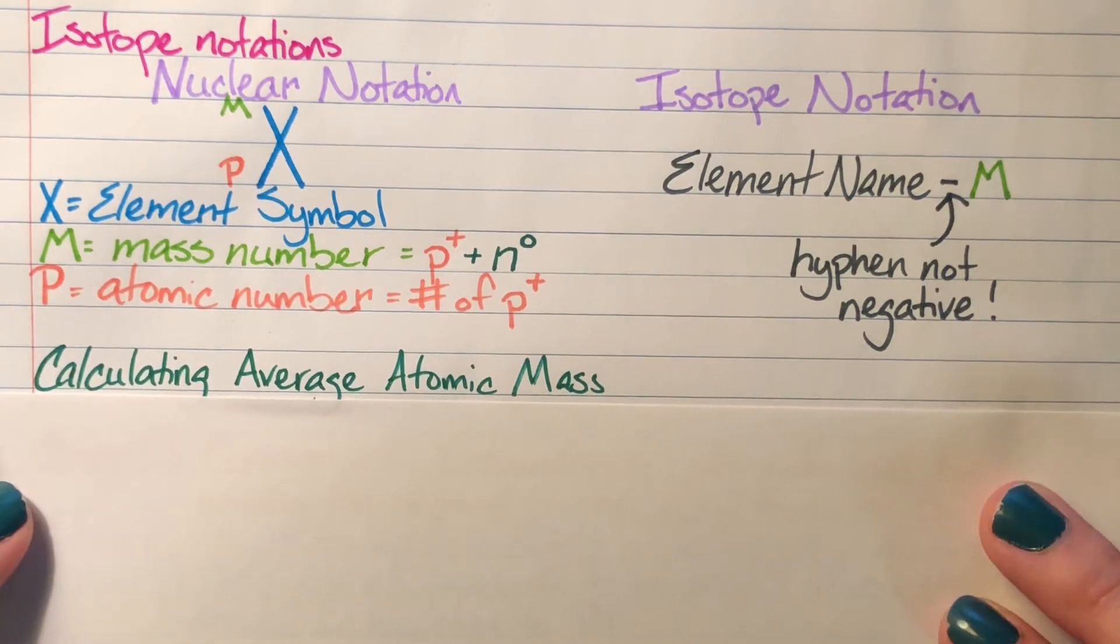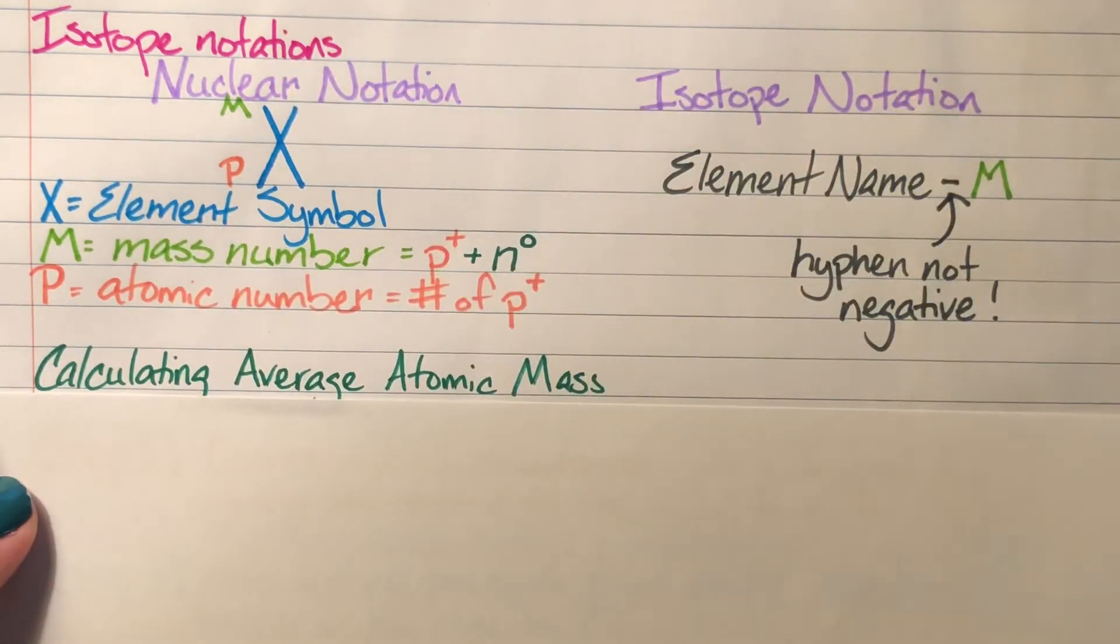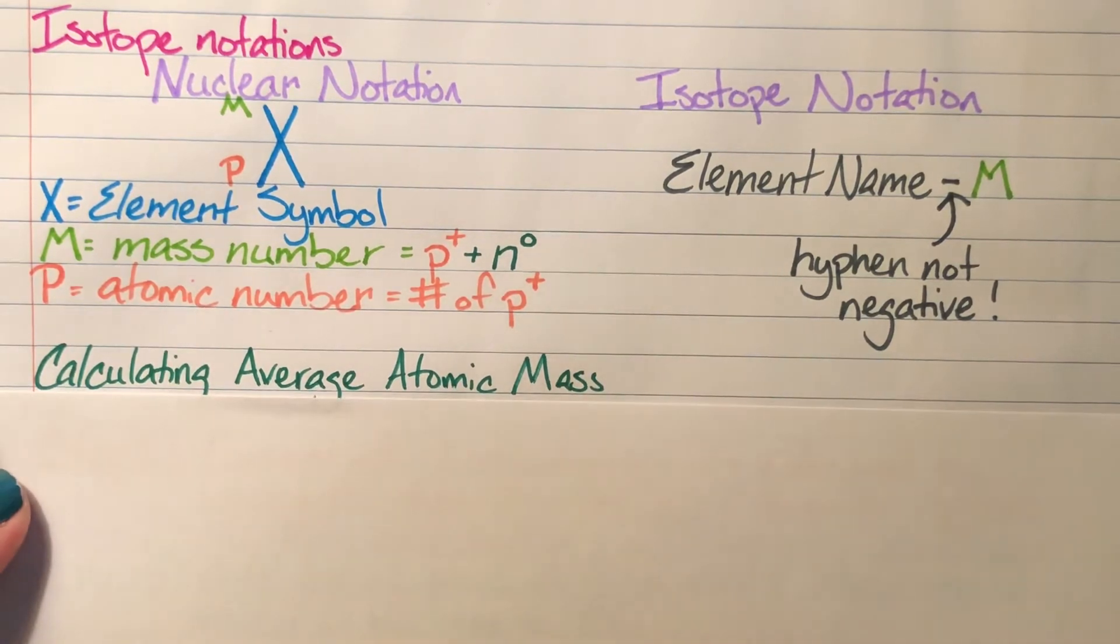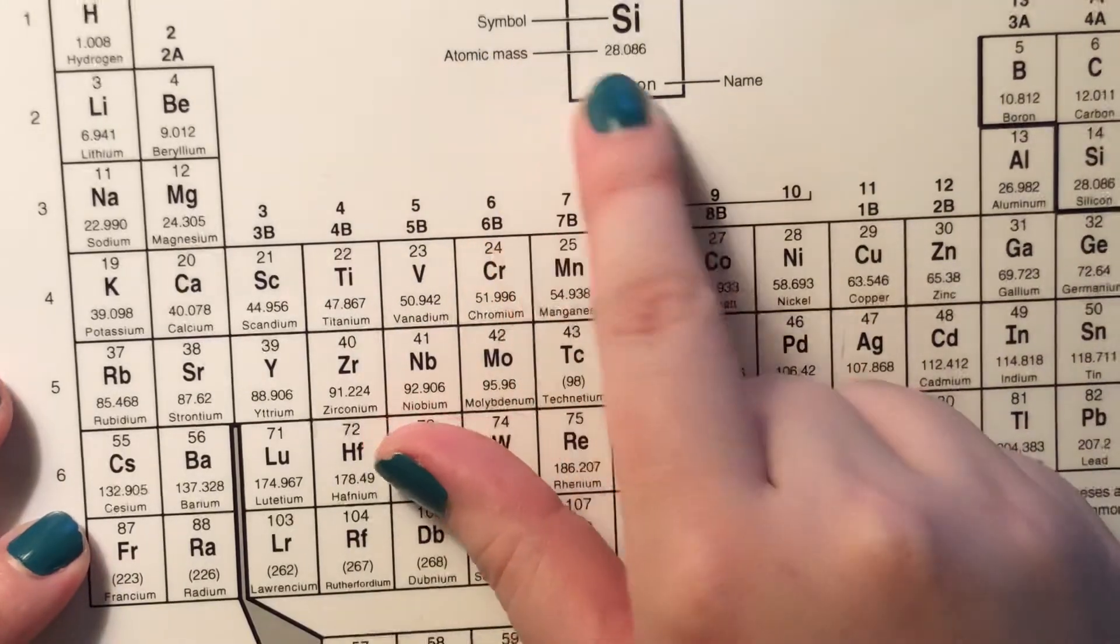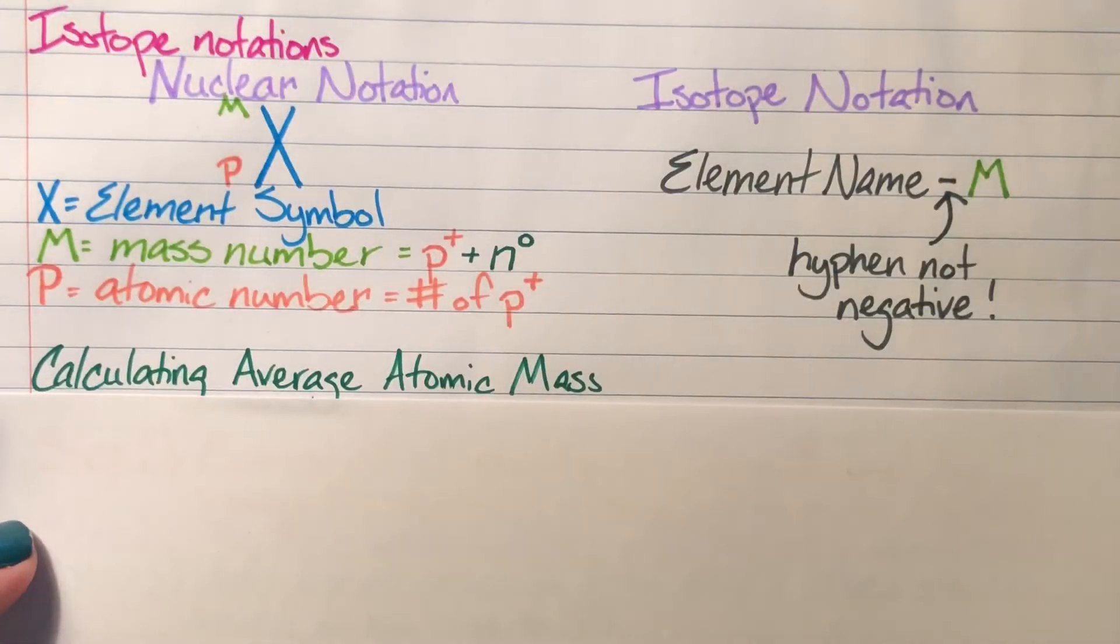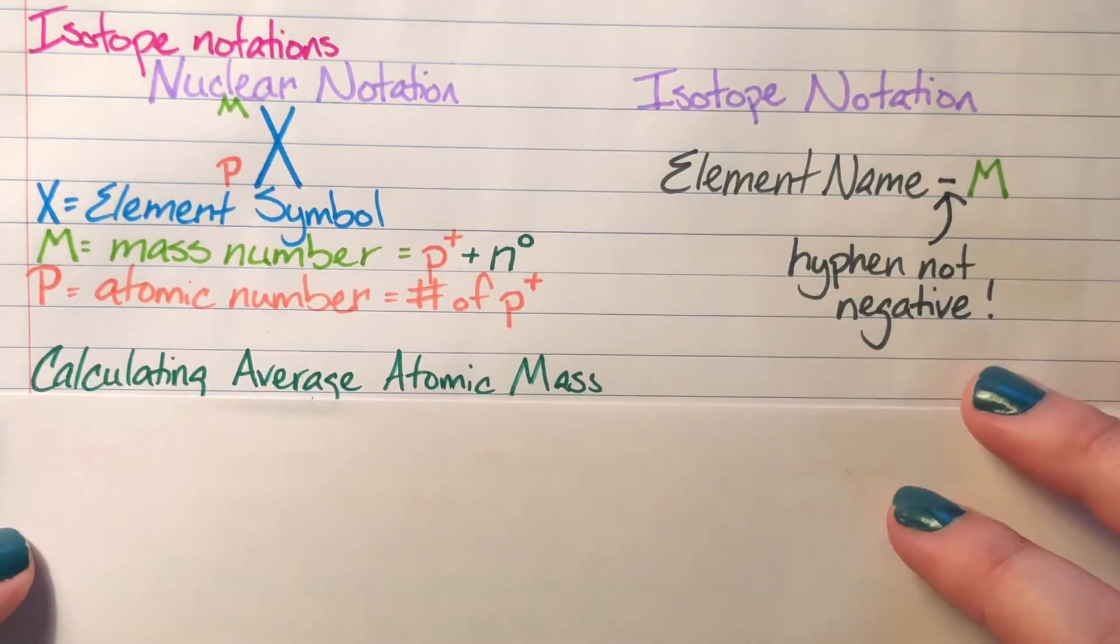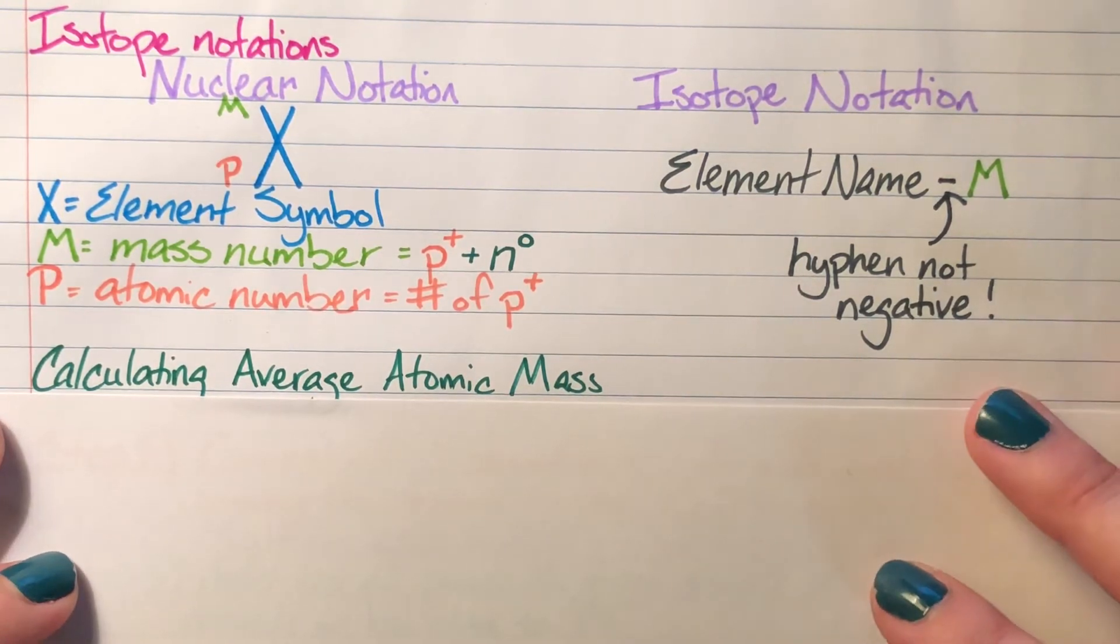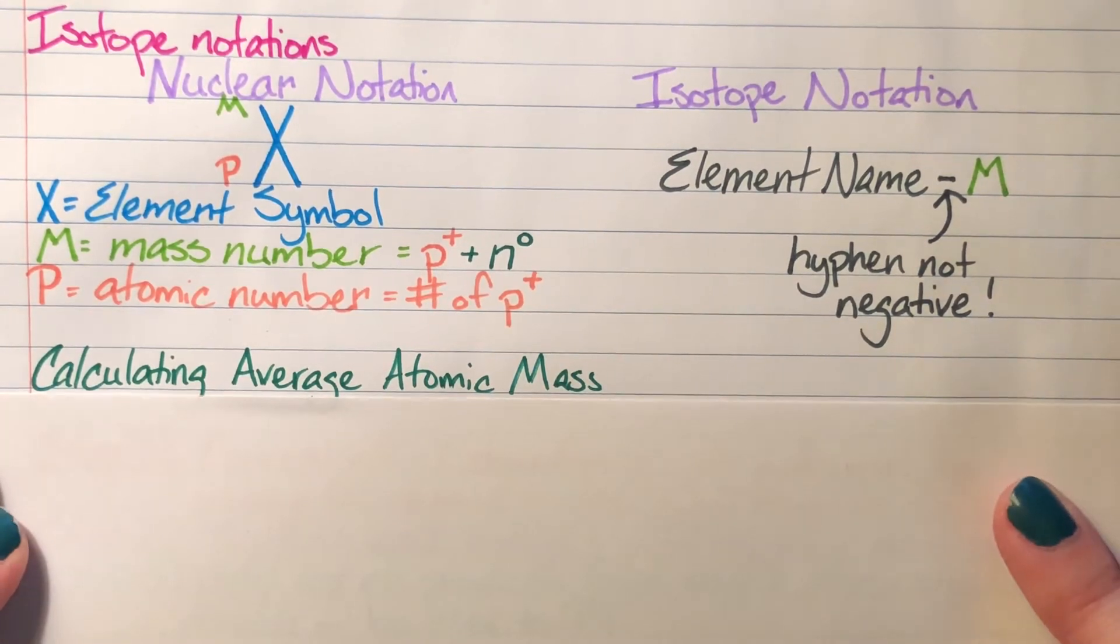Now that we've talked about isotopes, we're going to utilize this information to figure out average atomic mass. This average atomic mass is what we see on the periodic table—the atomic mass with all the decimals. It's an average of all naturally occurring isotopes, and we're going to figure out how they calculated it and calculate it ourselves today. For calculating average atomic mass, we have some steps that we'll go through step by step.